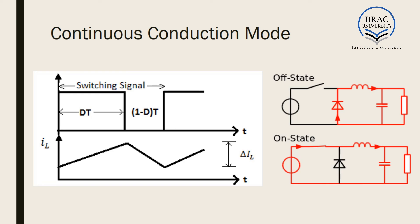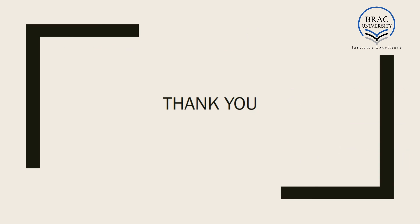One important thing to note: the current through the inductor is always positive — there is always current flowing through the inductor. This operational mode is called continuous conduction mode. Any power electronic switching circuit — buck, boost, or any other — works only when the inductor operates in continuous conduction mode. We must design circuits so that the inductor value ensures current never reaches zero. That's it for today; I'll be discussing different types of DC-DC converters in my next lecture. Thank you.